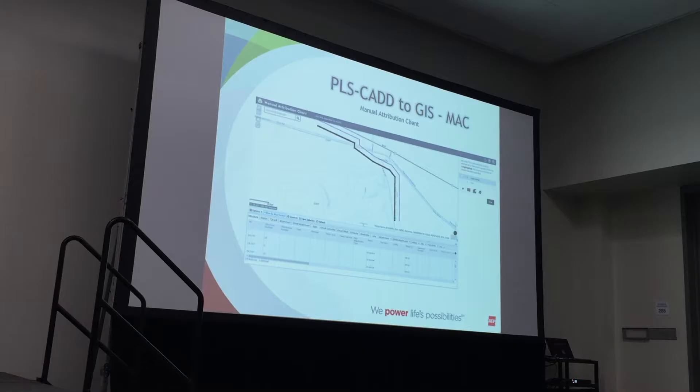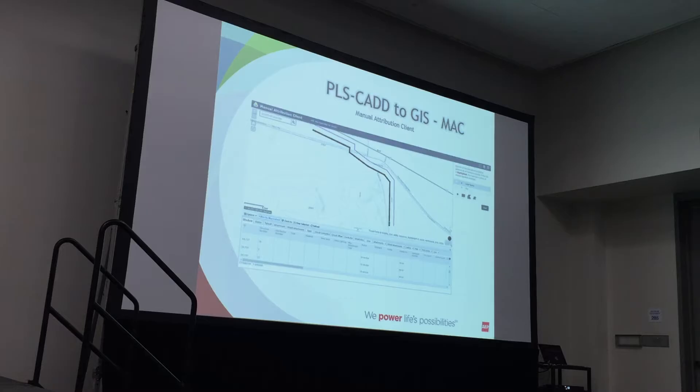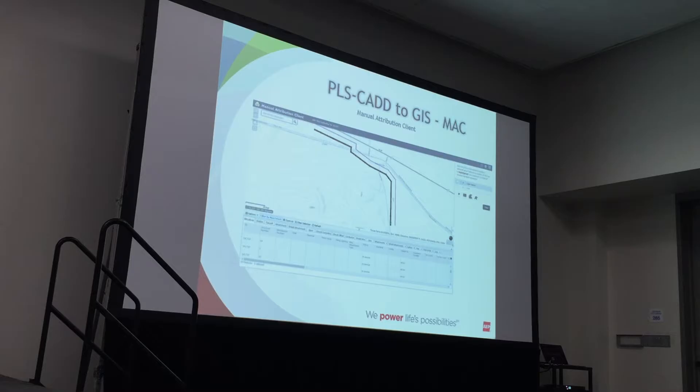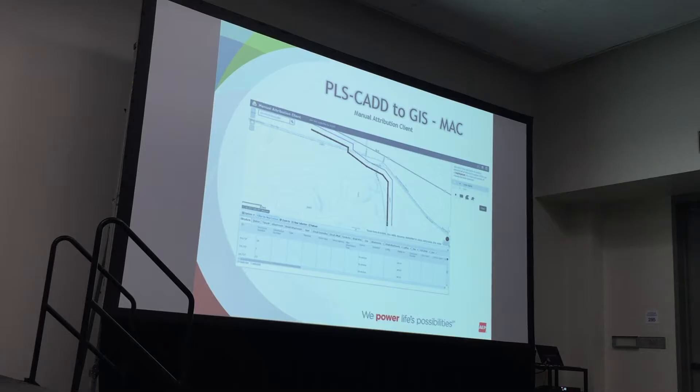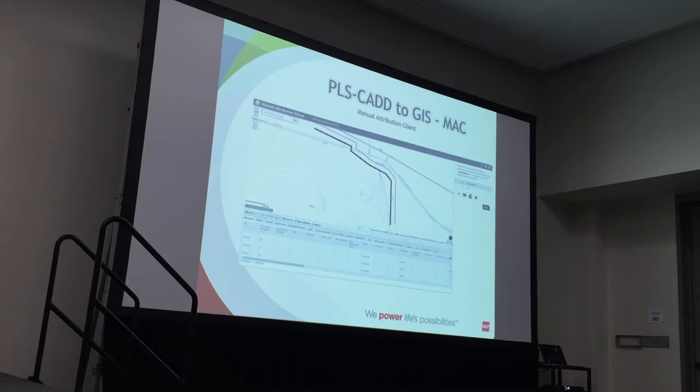One of the things we're working on in our agile team is using Web AppBuilder and portal to develop a step in our automation from PLS CAD to our GIS system. One of those steps is what we call our manual attribution client — a map we've built to fill in the gaps.